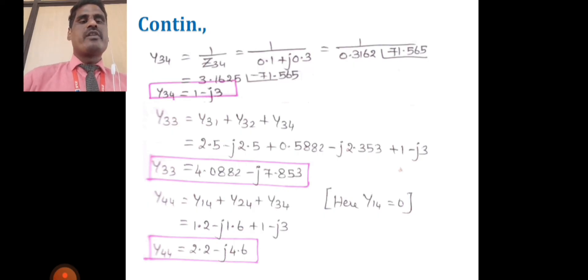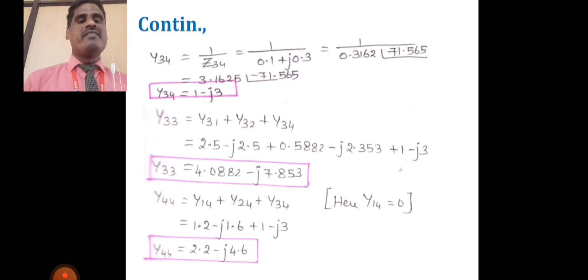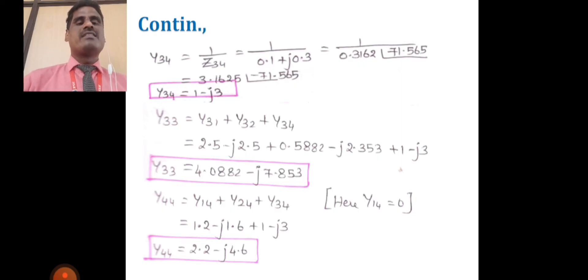Next, y34 = 1/z34 = 1 − j3 (note: this appears to reuse a value). Then y33 = y31 + y32 + y34, since the third line is connected with lines 1, 2, and 4. With y31 = 2.5 − j2.5, y32 = 0.5882 − j2.353, and y34 = 1 − j3, we get y33 = 4.082 − j7.853. The diagonal matrix y44 = 2.2 − j4.6.